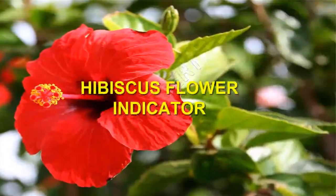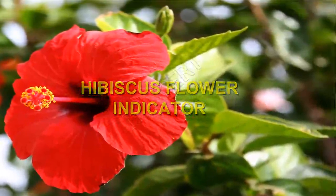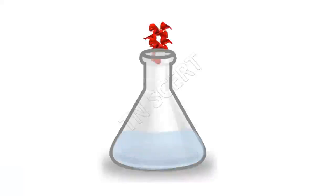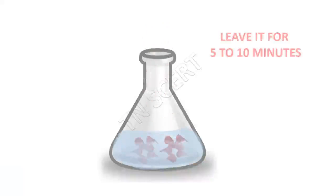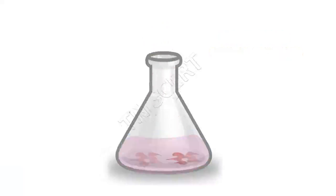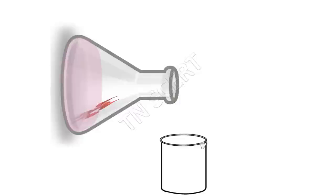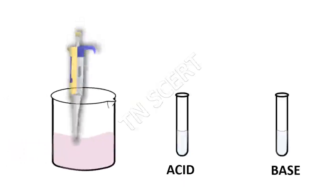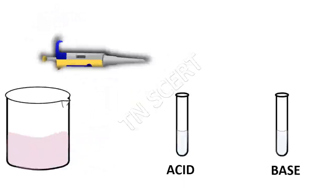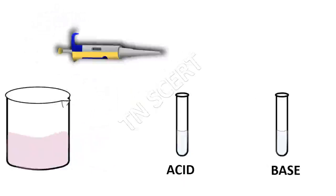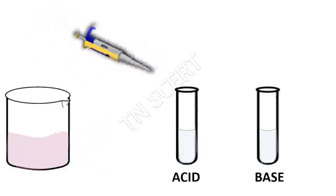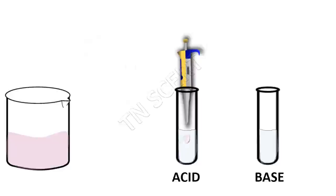Hibiscus flower indicator: Soak some hibiscus flowers in warm water for 5–10 minutes. Decant the solution and use it as the indicator. In acidic solution, its color will turn to deep pink or deep red.